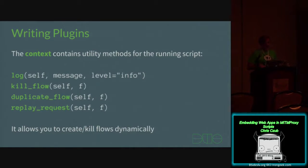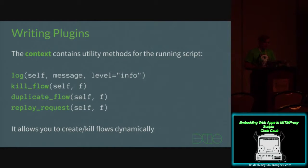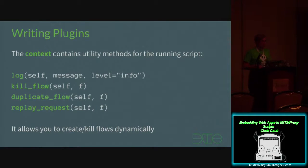The context contains a handful of useful utility methods that come in handy when writing scripts — it's known as a script context. The script context has a log method to log out to the terminal. You can kill a flow as it's happening so it won't reach the server or client. You can duplicate it. You can replay them. Basically you can take these flows, duplicate them, manipulate them, resend them, kill them — do all kinds of stuff with the script context.